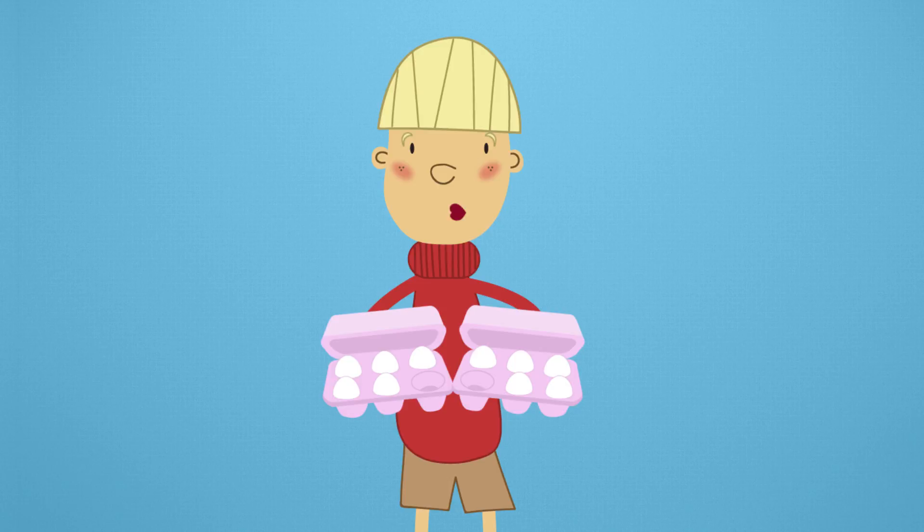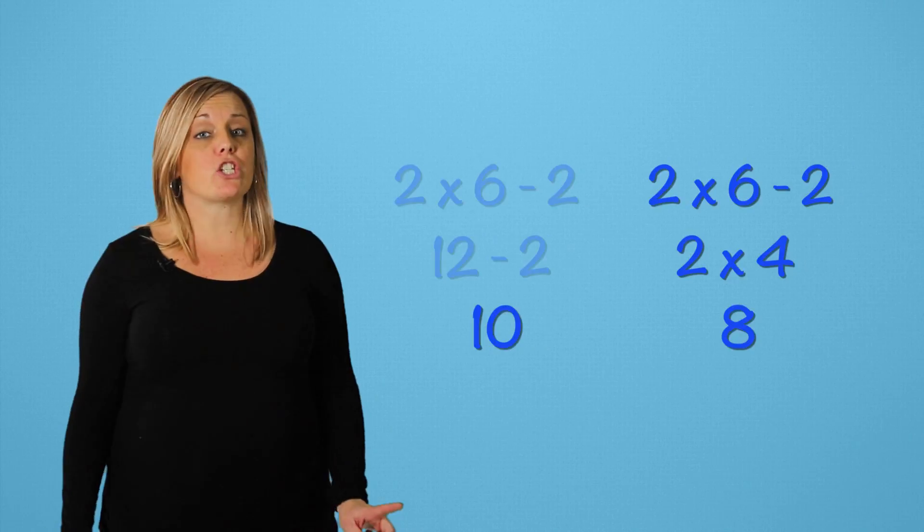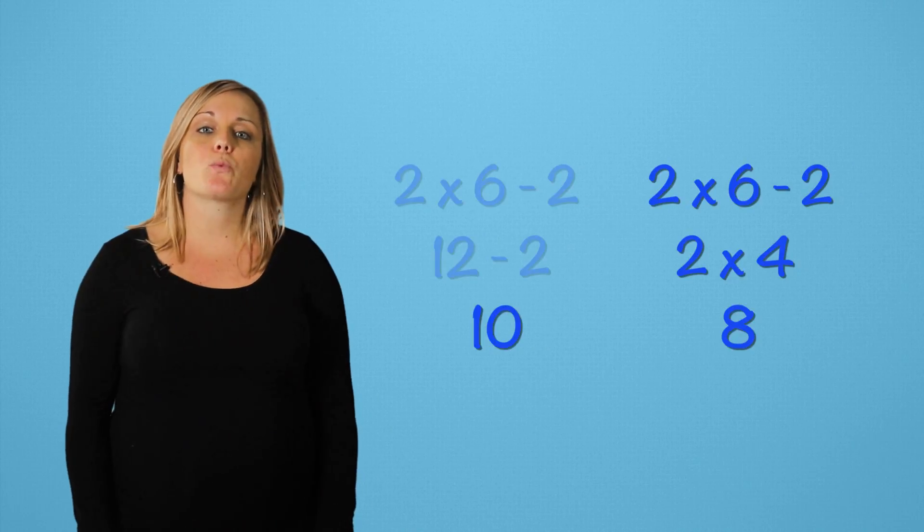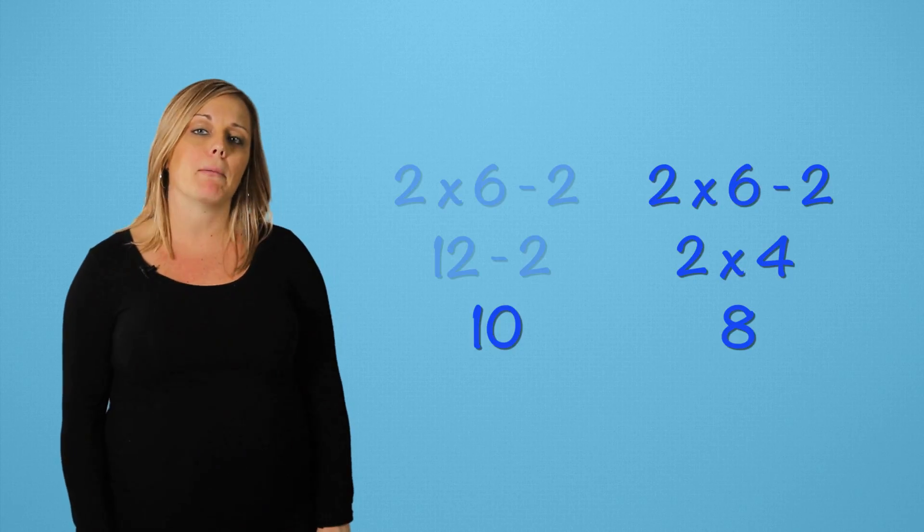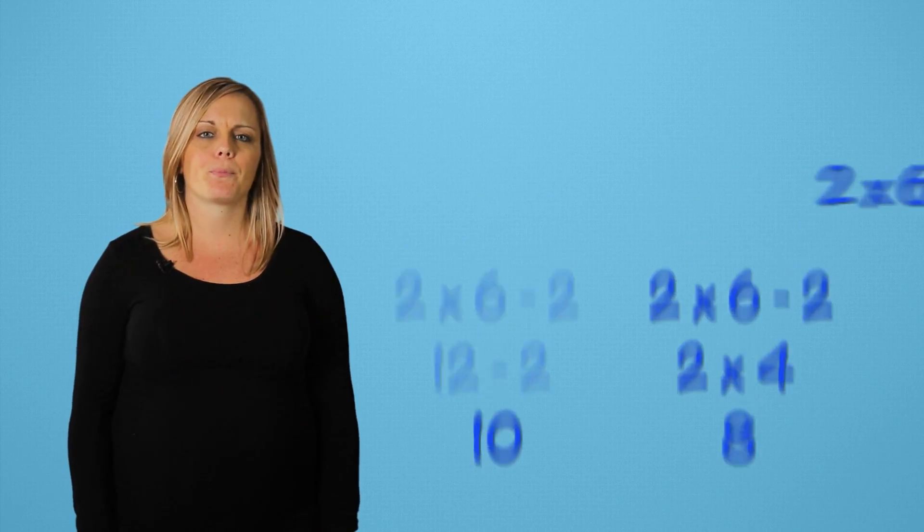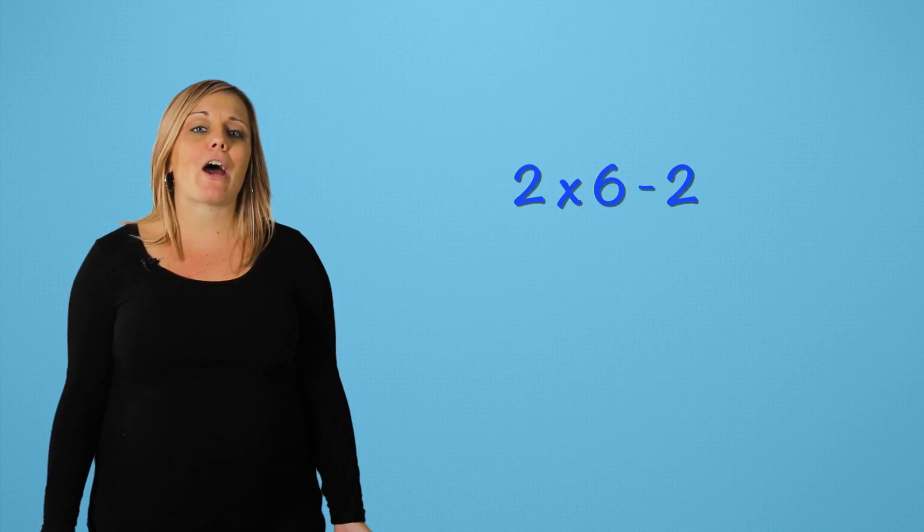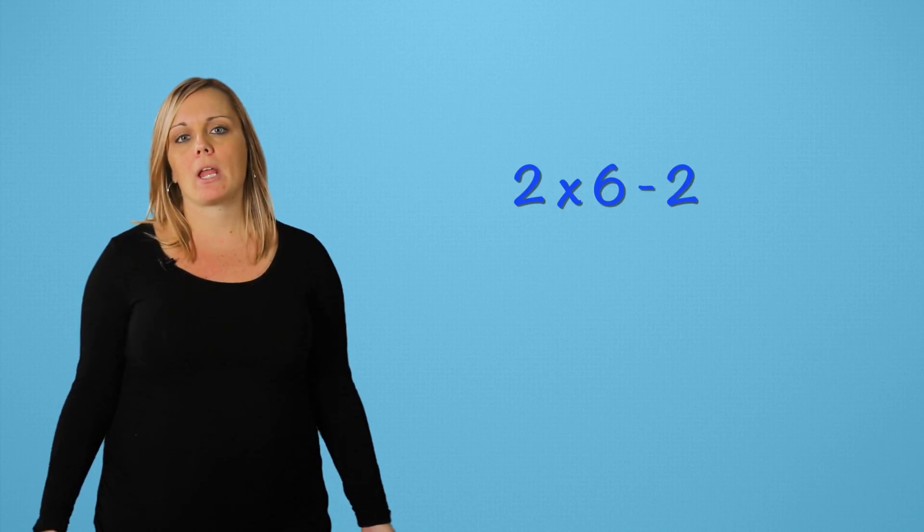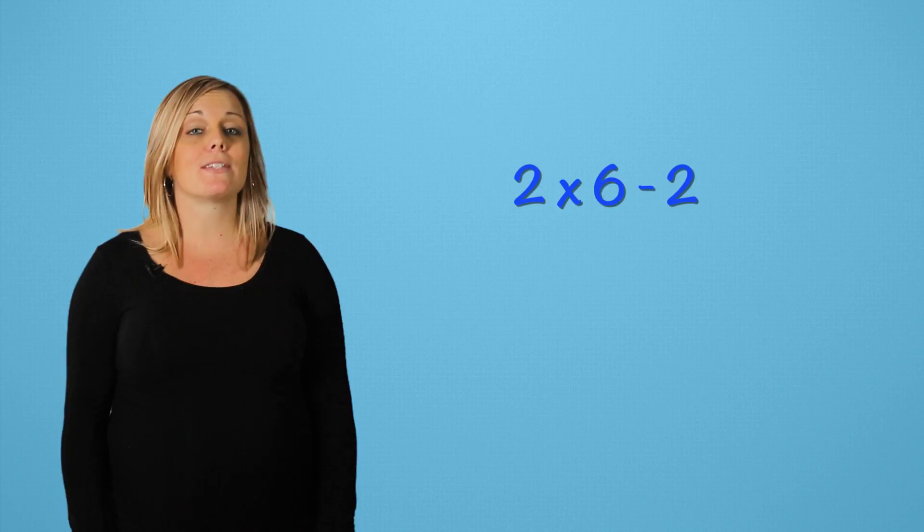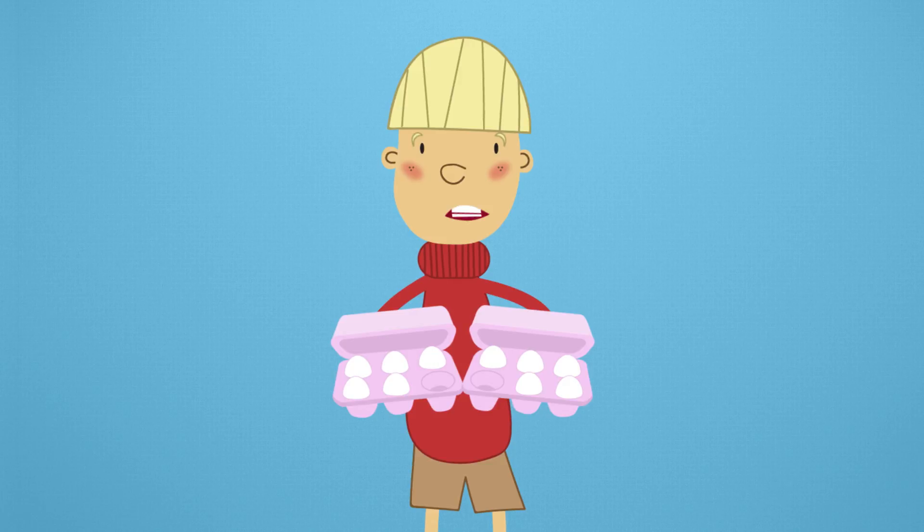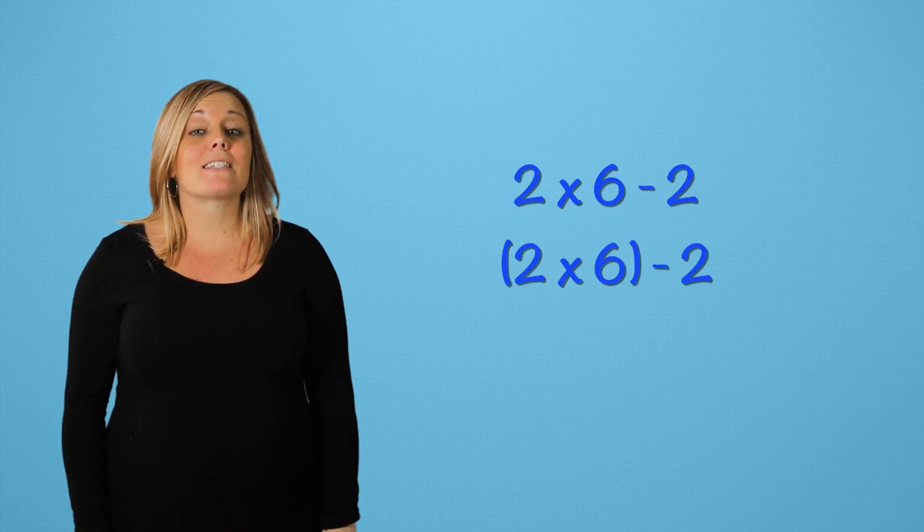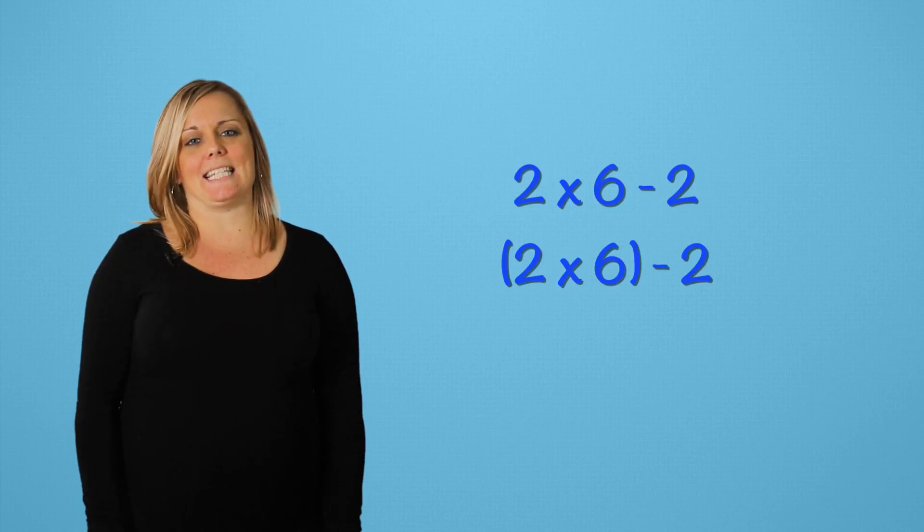Right. But, how do we remember what order to use? Good question, Richard. In this case, we can use parentheses to tell ourselves the order of the problem. Watch here. We know we need to figure out how many eggs we have. That's 2 cartons of 6 eggs or 2 times 6. So, we should put parentheses around that first to show we need to do it first. Exactly. Then, the rest of the equation is easy.